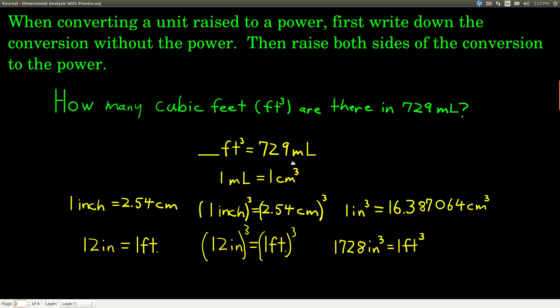At this point now, we have a conversion between centimeters cubed and inches cubed. So you see we went from milliliters, which is our starting point, to centimeters cubed, and now from centimeters cubed we can go to inches cubed. And then again, we don't know, probably off the top of our heads, the conversion between inches cubed and feet cubed. But you do know that 1 foot = 12 inches, right? So all you do is you write that down. Then you raise both sides, in this case, to the third power. When you cube 12, you get 1728.